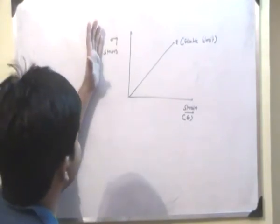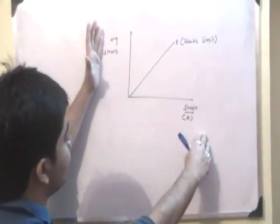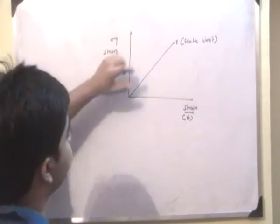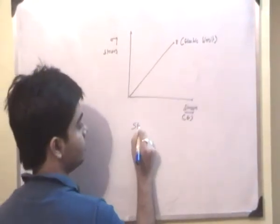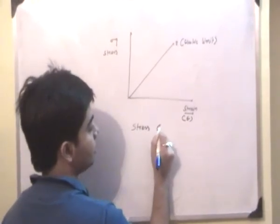Now Hooke said that if you have to represent stress along y-axis and strain along x-axis, then up to the point called the elastic limit which is defined as E, stress will be directly proportional to strain.